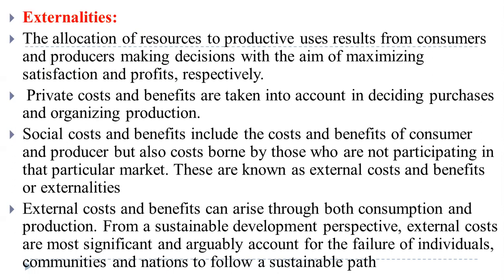Now we see the next concept: externalities. The allocation of resources to productive use results from consumers and producers making decisions with the aim of maximizing satisfaction and profit respectively. Private costs and private benefits are taken into account in deciding purchases and organizing production. Social costs and benefits include costs and benefits of consumers and producers, but also costs borne by those not participating in that particular market. These are known as external costs and benefits, or externalities. External costs and benefits can arise through both consumption and production processes. From a sustainable development perspective, external costs are most significant and arguably account for the failure of individual communities and nations to follow a sustainable path.